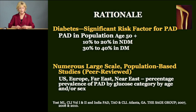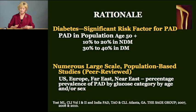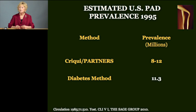The rationale for the diabetes method: diabetes is a significant risk factor for PAD. If you look at the population 50 and older, in those who do not have diabetes, 10 to 20% have PAD. However, in those who have diabetes, 30 to 40% have PAD. In addition, there are numerous large-scale population-based studies published in peer-reviewed journals that have looked at PAD by glucose status, age, and sex in the U.S., in populations in Europe, the Near East, Far East — many different types of populations. So there's a tremendous amount of data here.